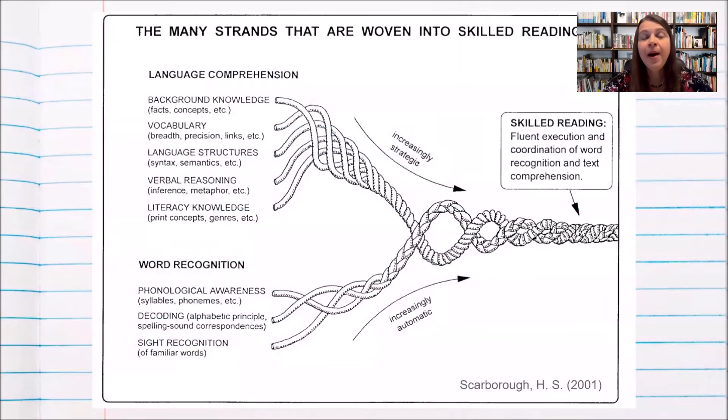So Hollis Scarborough took that model, turned it on its side, and was able to describe the other skills that come underneath those large headings: language comprehension and word recognition.